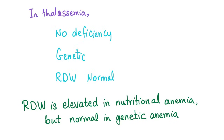To summarize: RDW is elevated in nutritional anemia but normal in genetic anemia. Genetic causes such as thalassemia will have normal RDW. Nutritional anemias such as iron deficiency and B12 deficiency will have increased RDW. Remember: iron deficiency anemia almost always has an increased RDW. Thank you very much — please subscribe and see you in the next video.